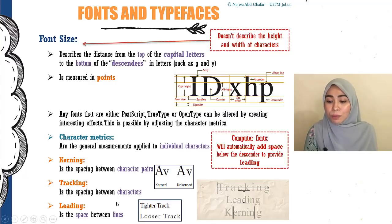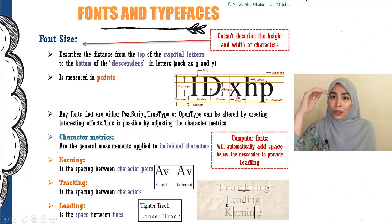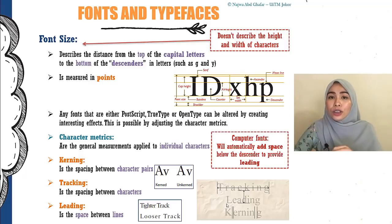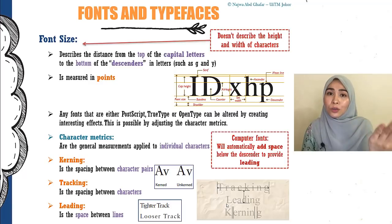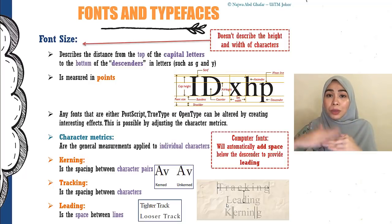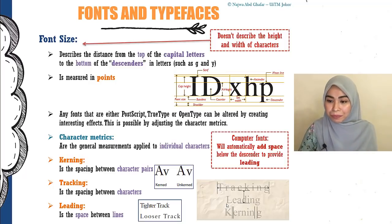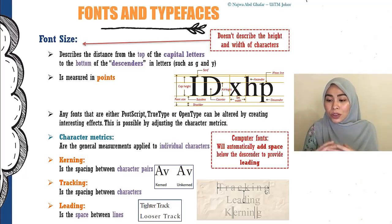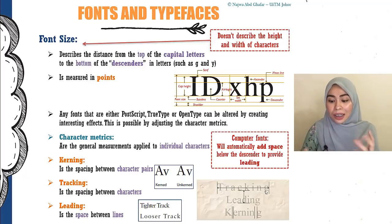Leading is the space between lines. Between the first line and the second line, there's a space in between — that is called leading. You will notice this when you do reports in Microsoft Word. Your lecturer might say to change the spacing to 1.5 line spacing — what you're doing is changing the spacing between lines, and that is called leading. Computer fonts will automatically add space below the descender to provide leading, but you can always change it.